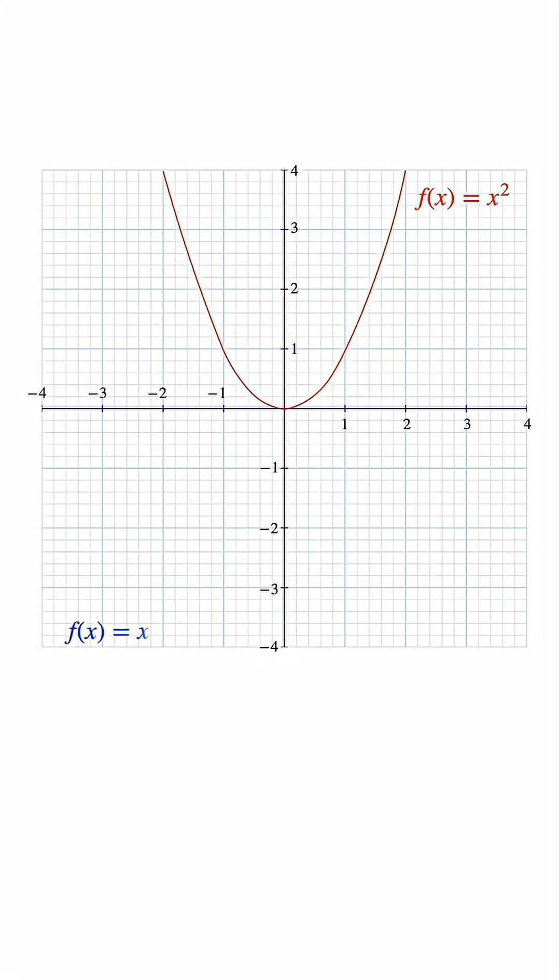Now for f of x equals x cubed. If x is negative one, f of x is negative one. If x is zero, f of x is zero. If x is one, f of x is one. This one forms an s-shaped curve.